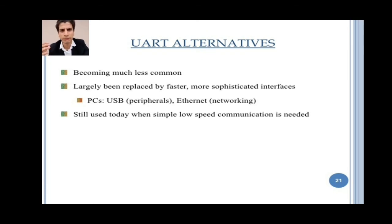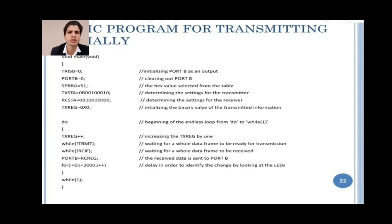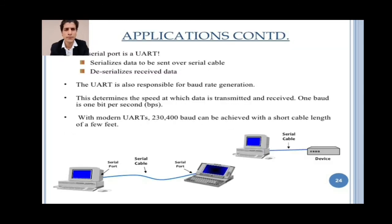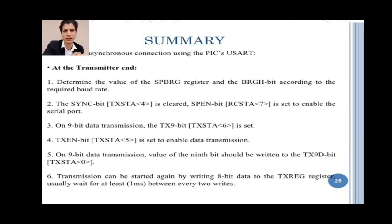UART alternatives are becoming much less common, largely being replaced by faster, more sophisticated interfaces such as USB peripherals and Ethernet. UART is still used today when simple, low-speed communication is needed. The UART is also responsible for baud rate generation. In summary: at the transmitter, determine the value of the SPBRG register and the BRGH bit according to the required baud rate. For receiving, 8-bit data stored in the RCREG register should be read.